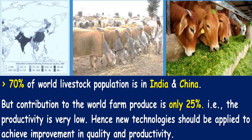According to different data, 70% of world livestock population is in India and China. But contribution to world farm produce is only 25%, which means that productivity per unit is very low. So productivity in India is very low. Hence, new technologies should be applied to achieve improvement in quality and productivity — to improve food quality and also to increase the productivity per unit area.